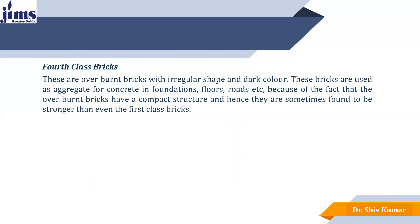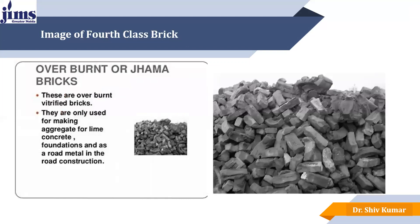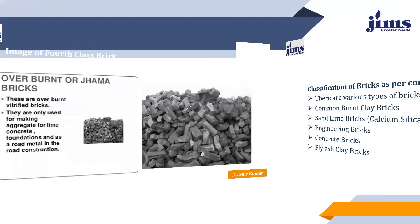The next is the fourth class brick. These are overburnt bricks, most irregular in shape, and darker in color — sometimes blackish, sometimes grayish, or metallic. These bricks are used as aggregate for foundations, floors and roads. Because overburnt bricks have a compact structure, they are sometimes found to be stronger than first class bricks. These are also known as Jhama bricks or metallified bricks. They are used for making aggregates for lean concrete or for road construction as pavement.